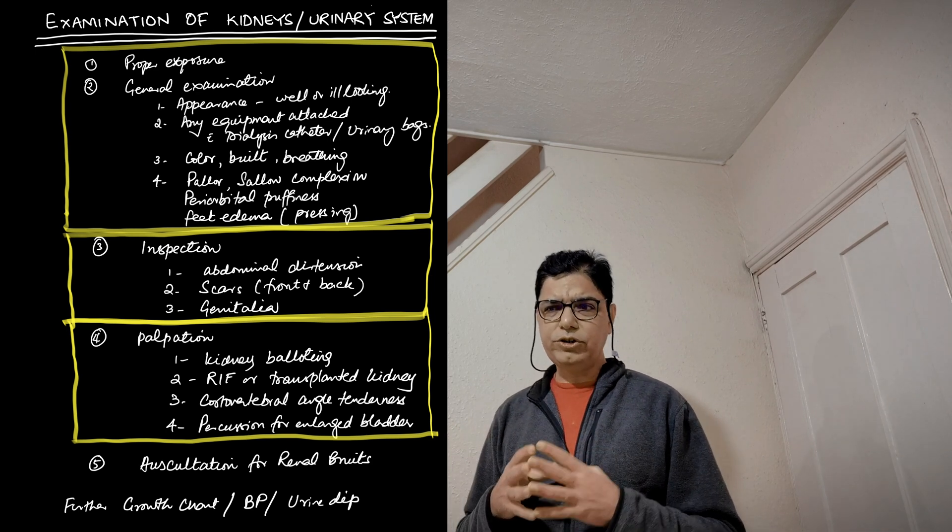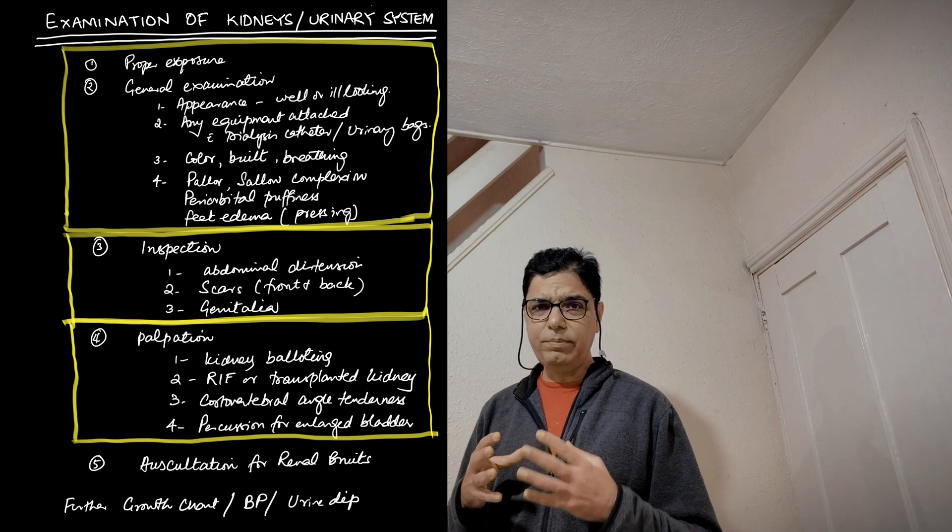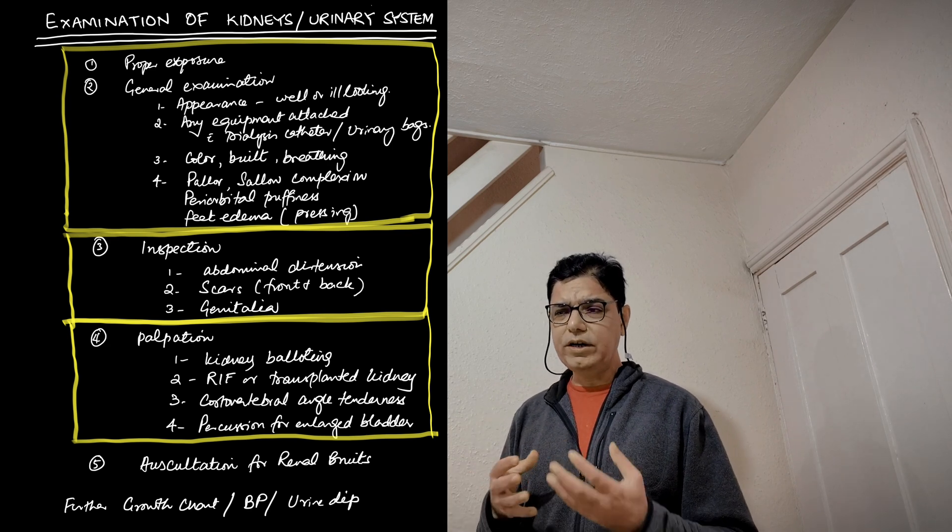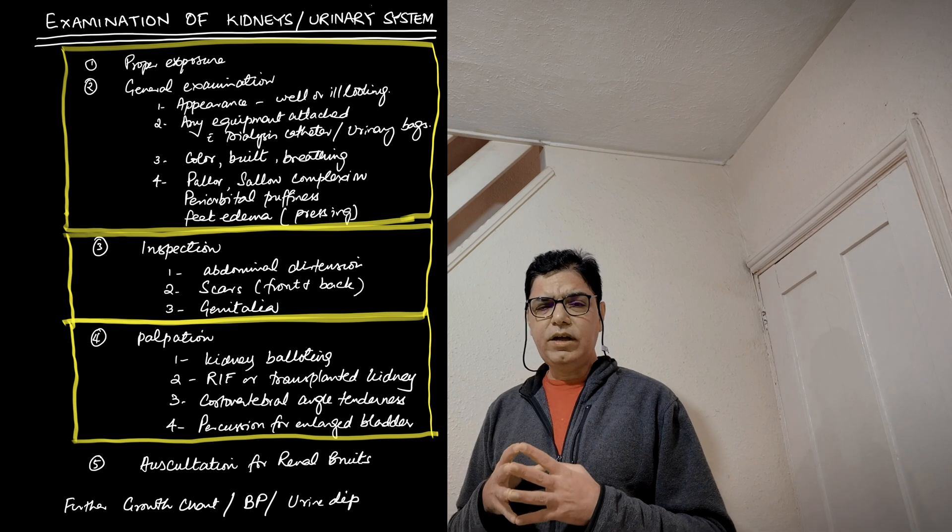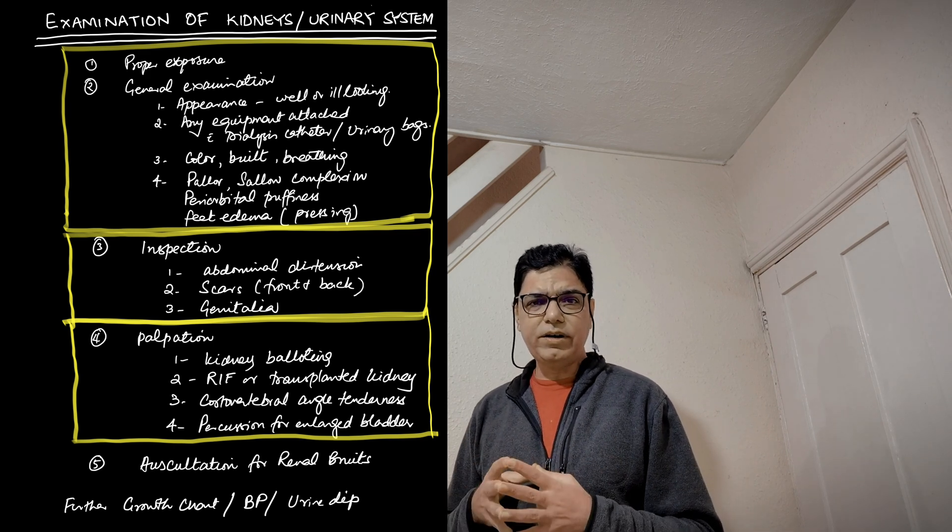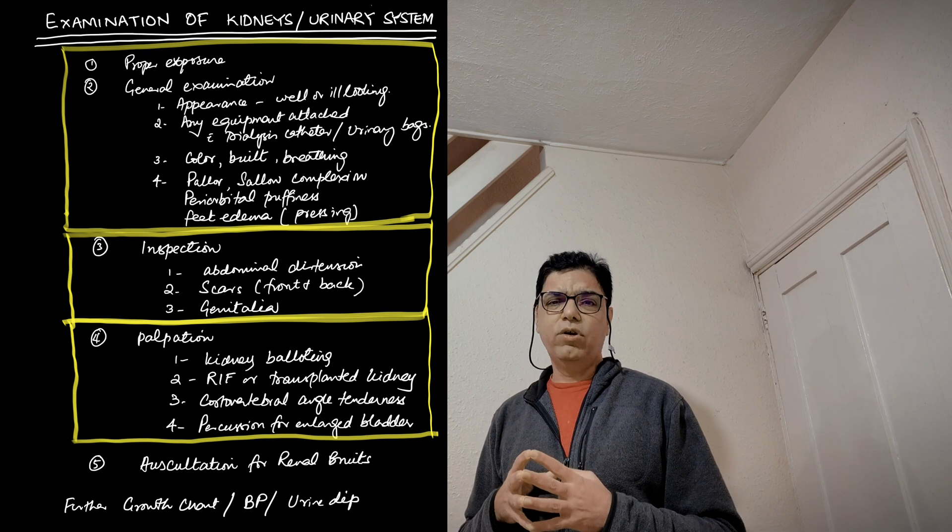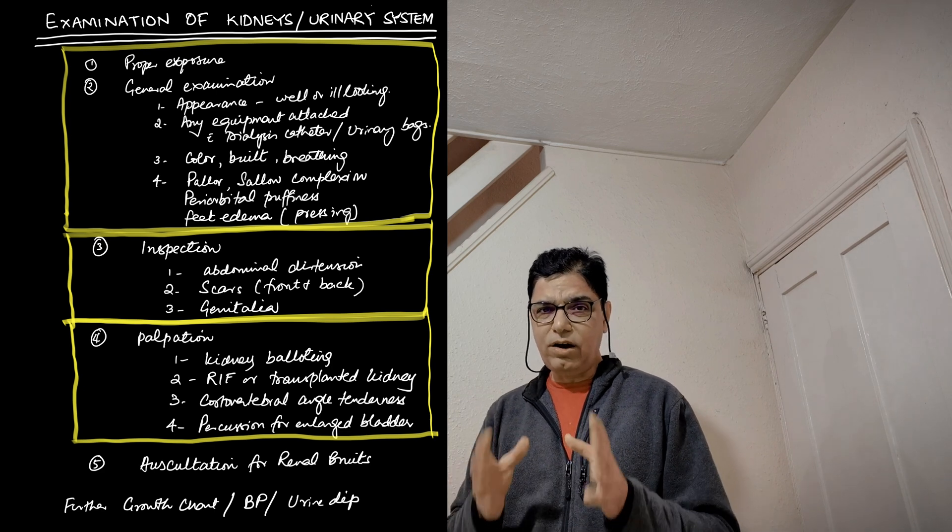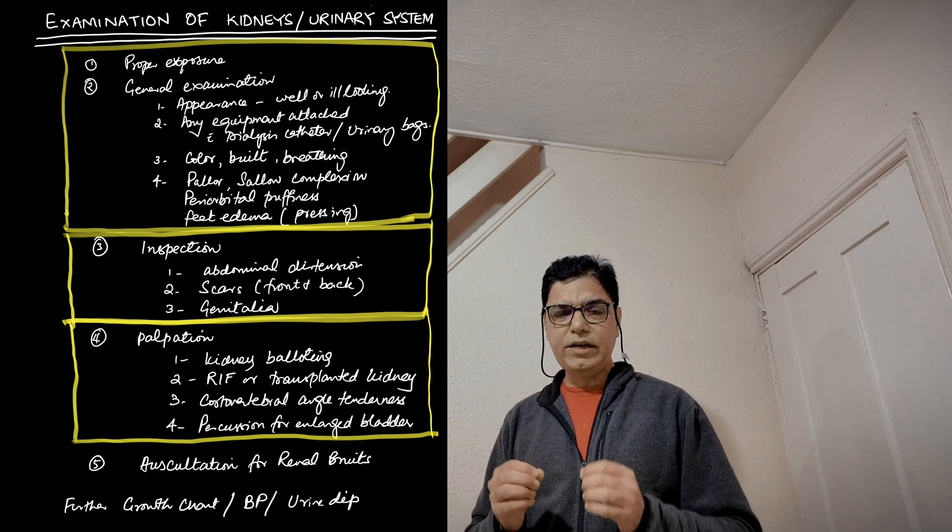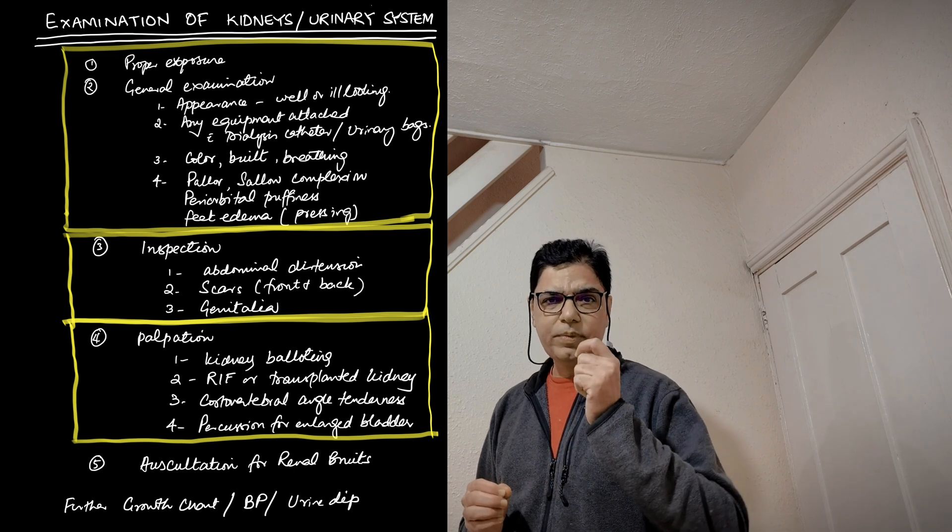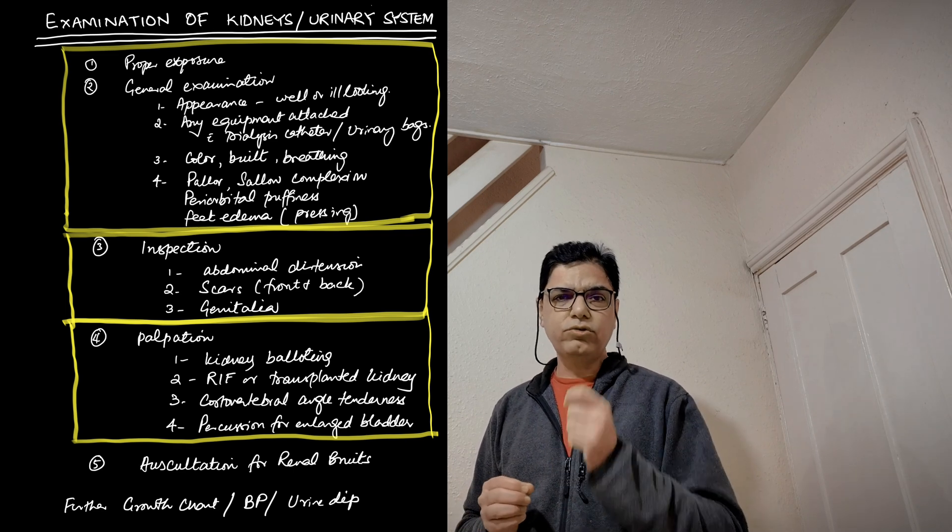In palpation, you would check for any masses. You will check for urinary balloting. You will check the right iliac fossa for any transplanted kidneys, and you would do percussion for an enlarged bladder. And in auscultation, you actually auscultate for any renal bruit. This is how you would approach any station in which you are supposed or asked to do a urinary system examination.